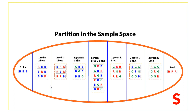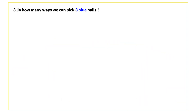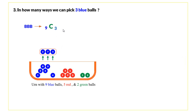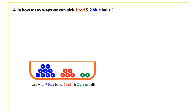Question three: in how many ways can we pick three blues? We are picking three blues out of nine, so the first, second, and third balls are all blue. The number of ways is C(9,3), which equals 84 possible ways.